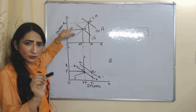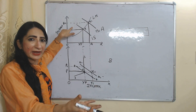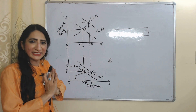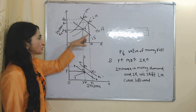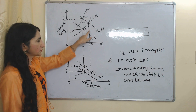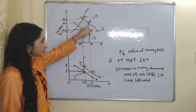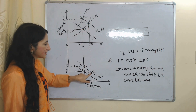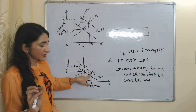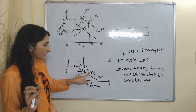Income has increased because through government expenditure, the government creates many employment opportunities, eventually increasing income in the economy. Interest rate increases because, in order to do expenditure, the government borrows money from banks — as a result, demand for money increases and eventually interest rate also increases. So this is our new equilibrium point E1. Corresponding to this, our new equilibrium point in the other diagram is also E1, and both represent the same situation in the economy.